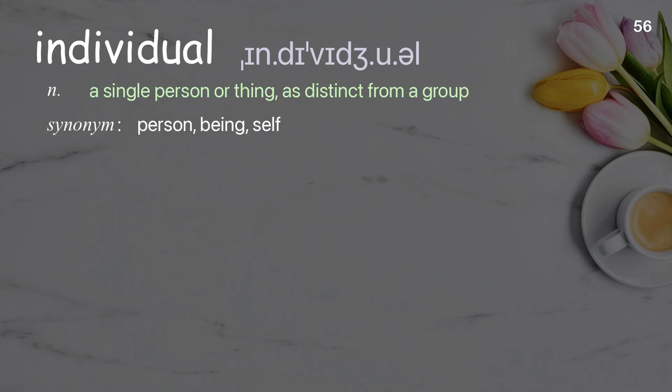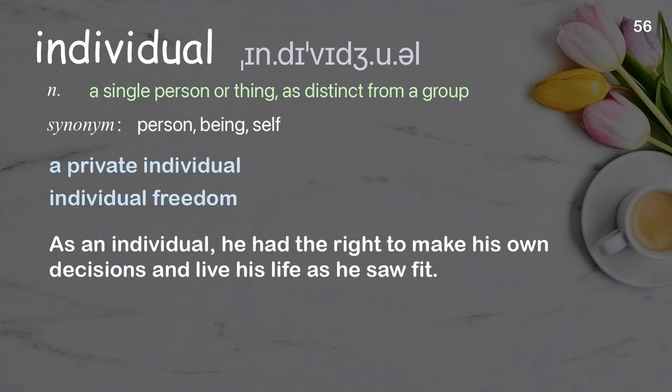Individual: A single person or thing, as distinct from a group. Examples: A private individual. Individual freedom. As an individual, he had the right to make his own decisions and live his life as he saw fit.